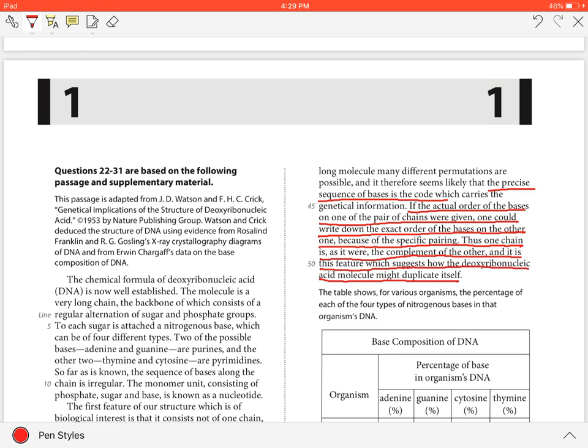The authors hence can be said to use the words exact, specific, and complement in these lines to suggest the base pairings along a DNA chain is understood and predictable and may explain how the DNA duplicates itself.